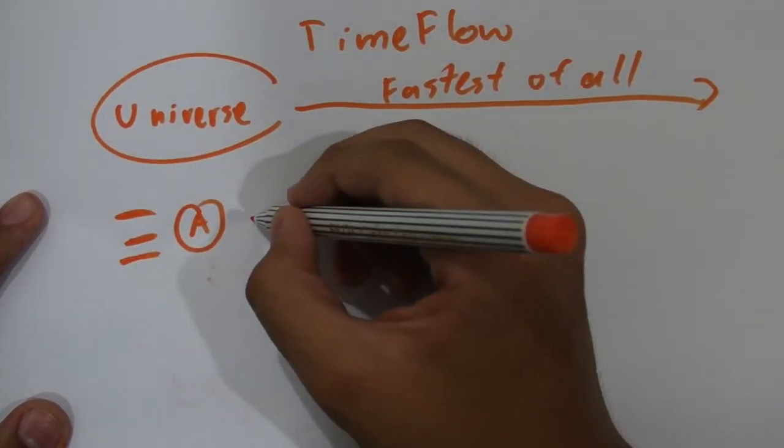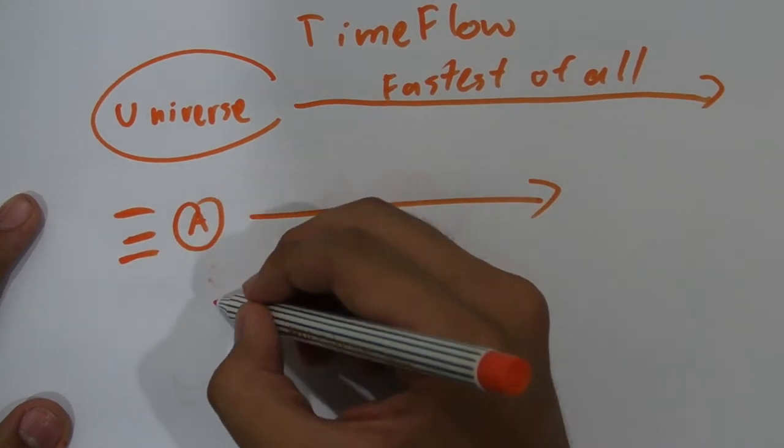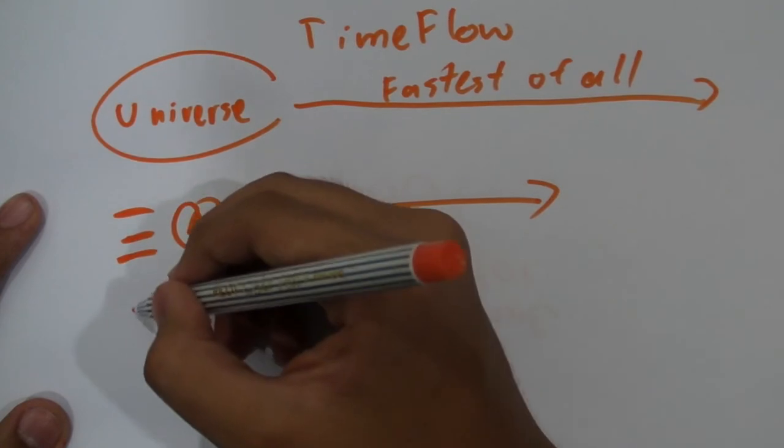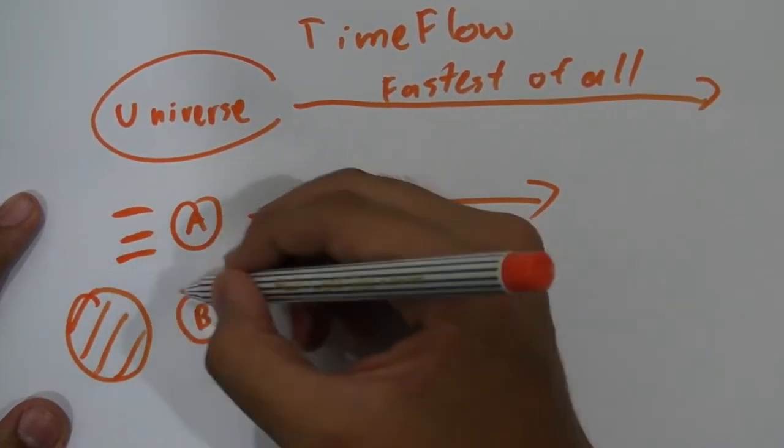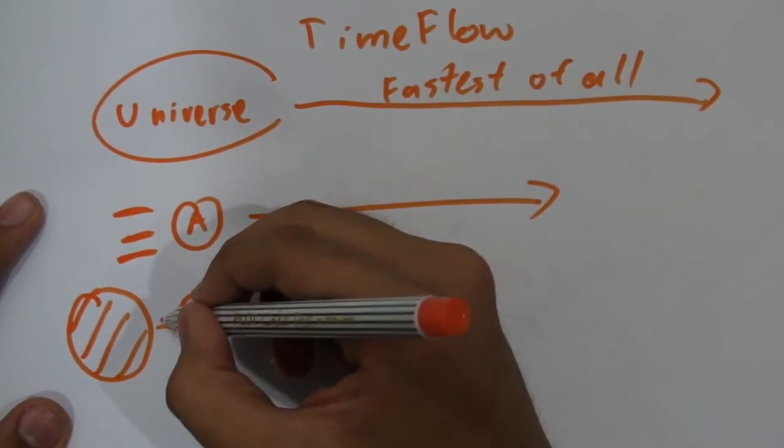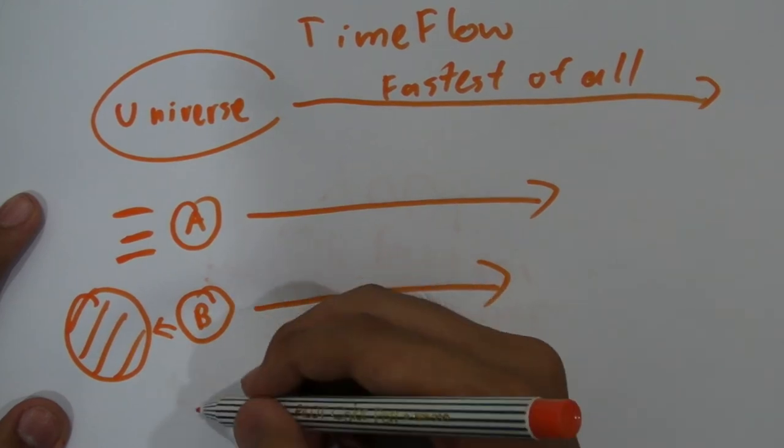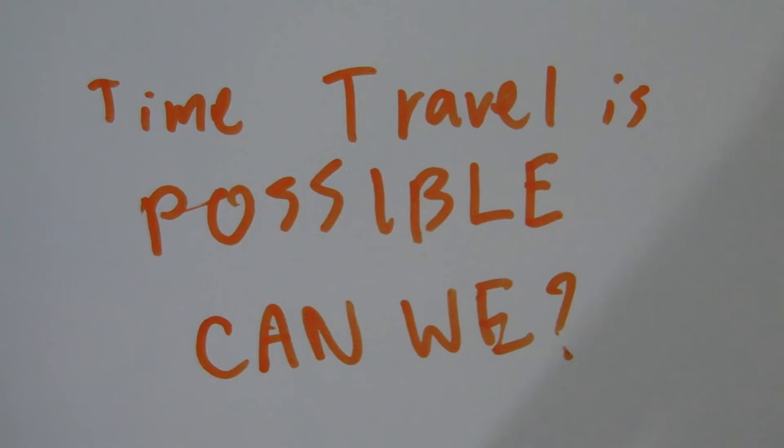But what if we have an object that we accelerate so hard, so fast that it breaks the law of physics and goes beyond the speed of light? The time flow would be so slow that it will start to boomerang into the past. So this leads to the question, time travel is possible, isn't it?